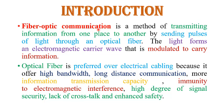In fiber optics, communication is basically a method of transmitting information from one place to another place by sending pulses of light through an optical fiber. The light forms an electromagnetic carrier wave that is modulated to carry information. The basic principle is to send information over a long distance without distortion or attenuation, so that the information is received by a receiver in its original form.